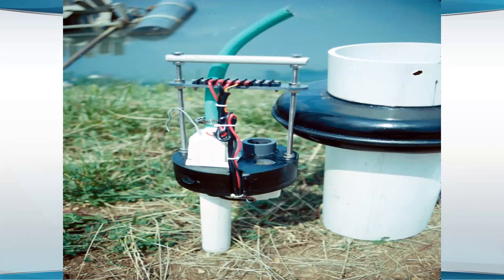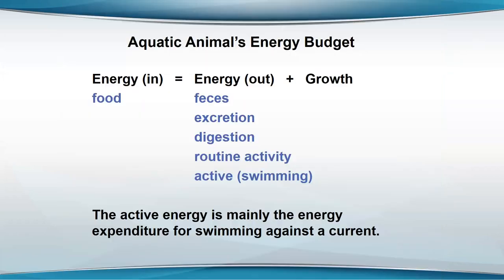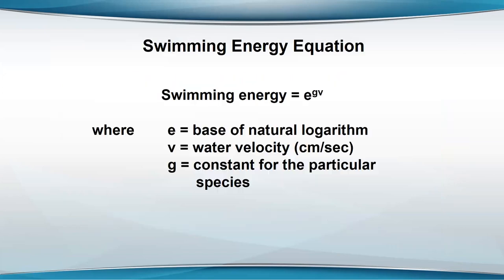Aeration has a major demand for energy and we do need to consider increasing the efficiency of energy used for aeration. Regarding aquatic animal energy budgets — if you feed them, energy comes in from food, and energy goes out in feces, excretion, digestion, routine activity, and swimming. The active energy is mainly the energy expenditure for swimming against the current. There's a general equation relating the amount of energy for swimming to the velocity of the water — the greater the water velocity, the more energy the animal uses to maintain its position.